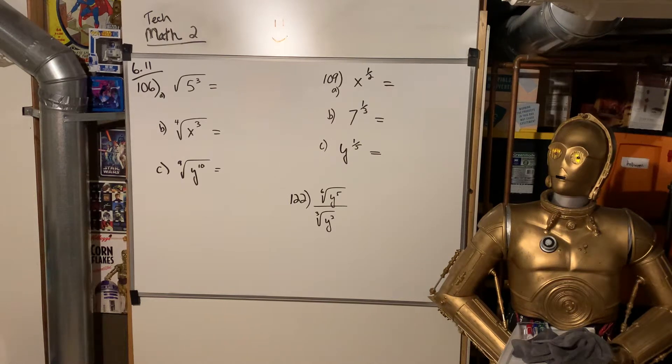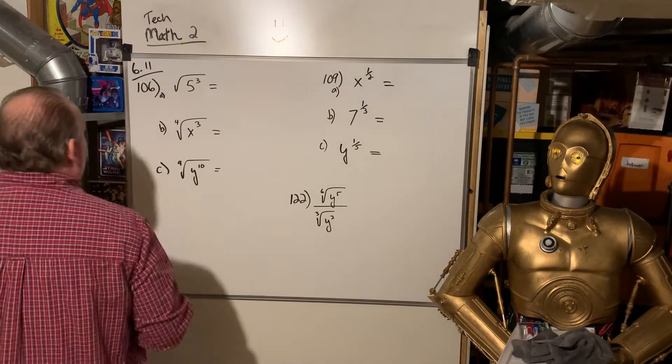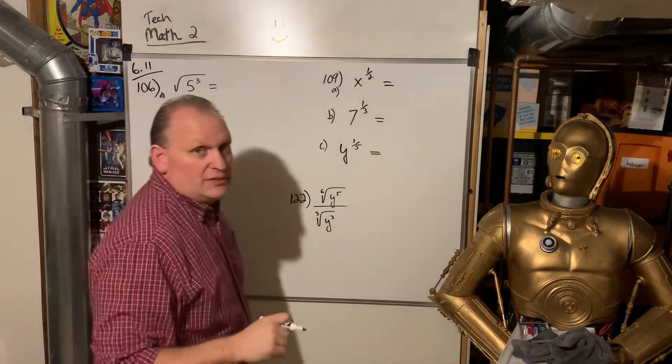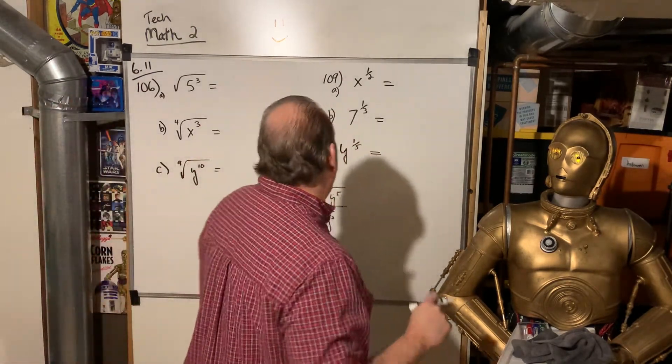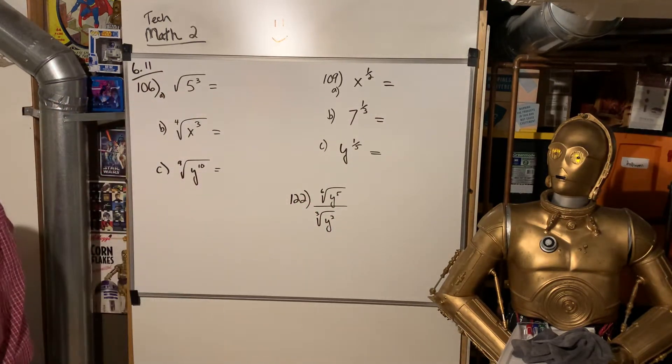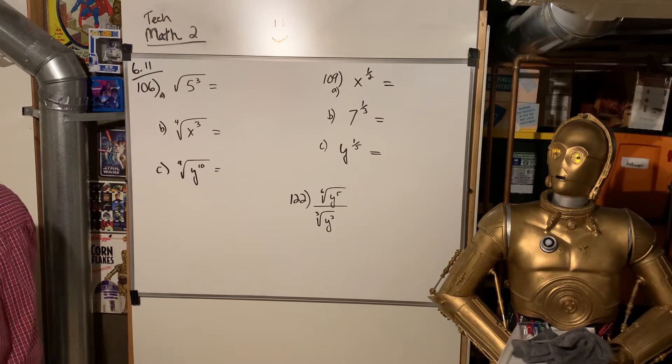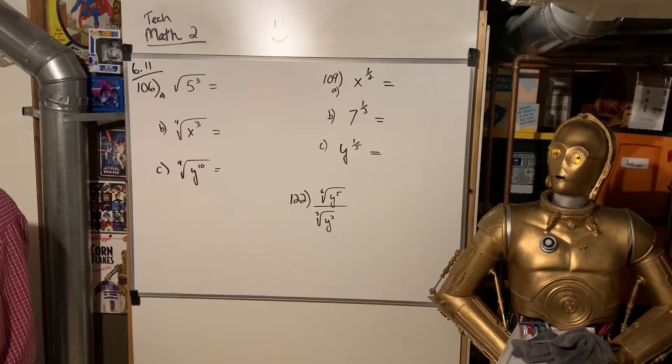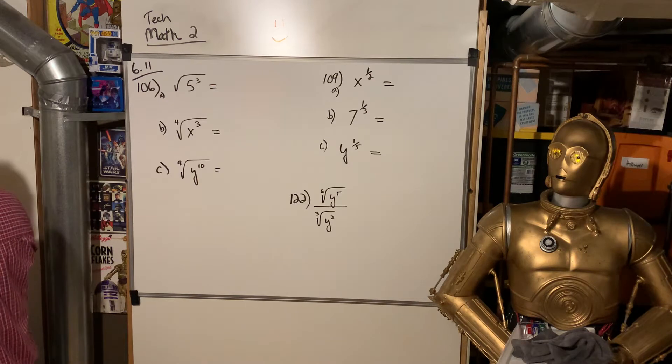Okay, we are back. This is Tech Math 2. We're looking at 6.11, and that's in the Red Book, and we're on page... What is it in the Red Book here? It looks like 285.